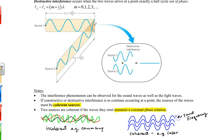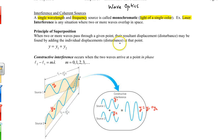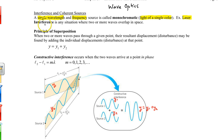Now let's discuss interference. Any situation where two or more waves overlap in the same place at the same time is called interference.